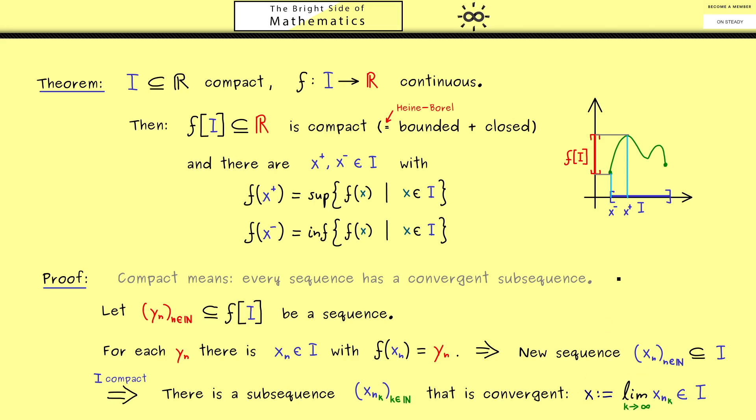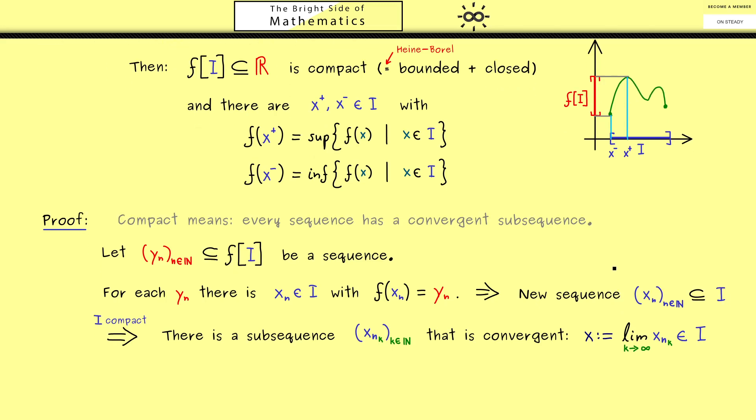Please note here this is something that happens on the x-axis. But of course we can simply translate that to the y-axis by using the function f. And there the continuity helps us. Now simply by definition we have that yn is equal to f of xn. And here we can ask ourselves if this sequence is also convergent.